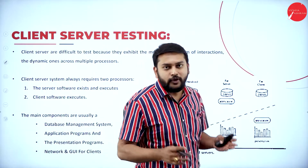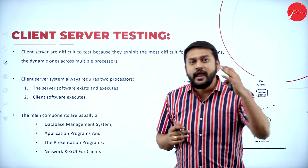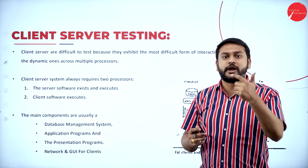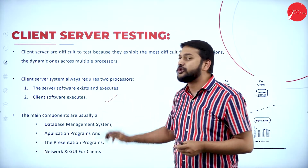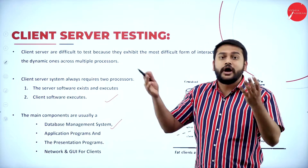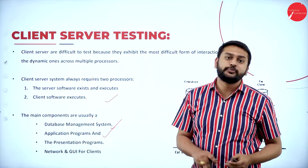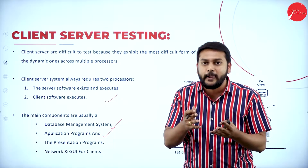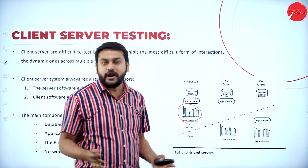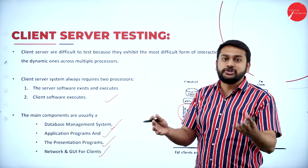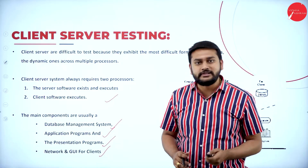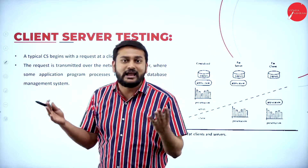Now let's look at client-server and the interaction testing involved. It is very difficult to perform interaction testing in client-server because there are two processors — one for the client and one for the server. The main components in a client-server system are: the database management system, application programs that interact with clients to fetch data, presentation programs that help represent results, and networks and GUI clients.